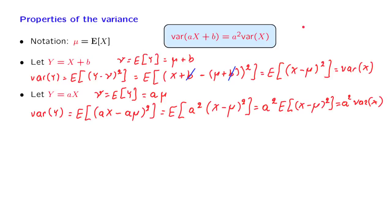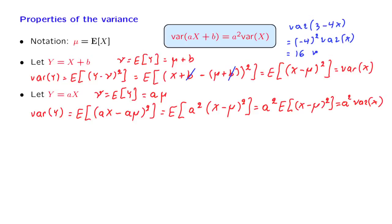As an example, the variance of 3 minus 4x is going to be equal to minus 4 squared times the variance of x, which is 16 times the variance of x.